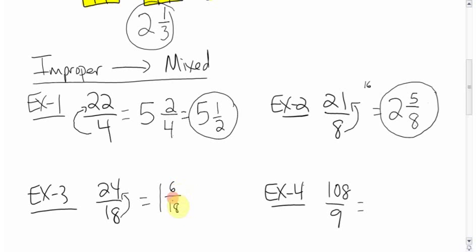6 goes in here once, 6 goes in there 3 times. So 6 goes in there once, 6 goes in there 3 times, you're left with 1 and 1 third.